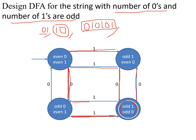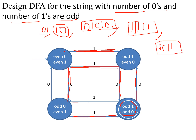If you take any combination — say '1111' with one zero — that has an odd number of ones and an odd number of zeros, it will follow the transitions accordingly. Now, if your string has only even number of zeros and even number of ones, this other state will be the final state.